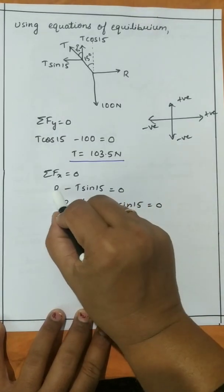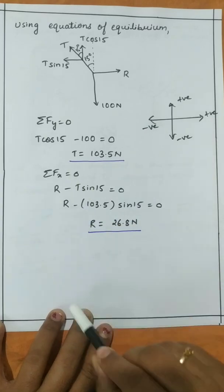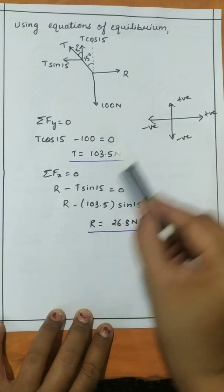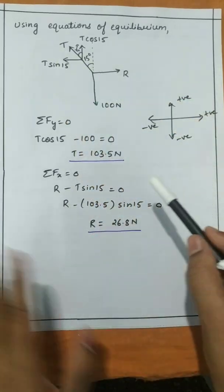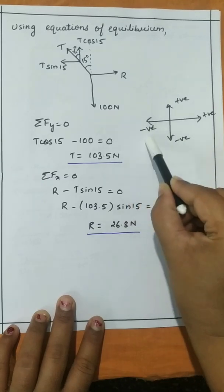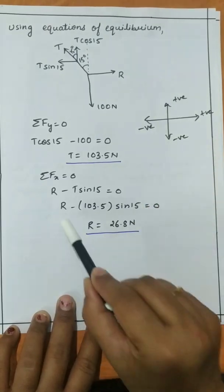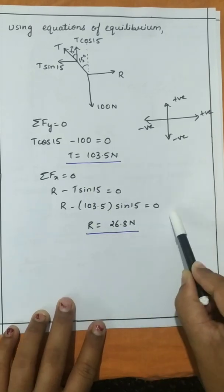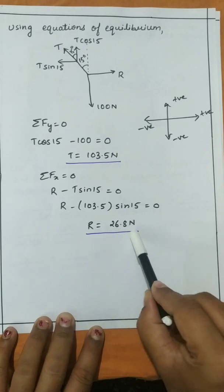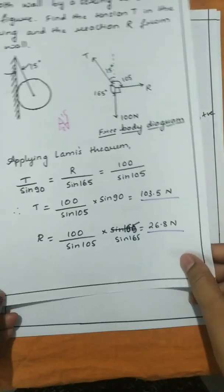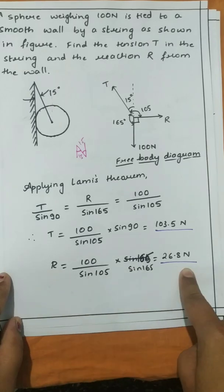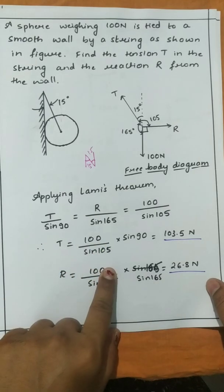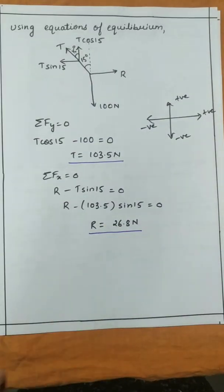Taking summation of horizontal forces equal to zero (sigma Fx = 0): R is towards the right (positive) and the horizontal component T sin 15 is towards the left (negative). So R minus T sin 15 = 0, substituting T = 103.5, we get R equal to 26.8 N — the same result as from Lamy's theorem. We can cross verify: the same problem can be solved using Lamy's theorem as well as using the equations of equilibrium.